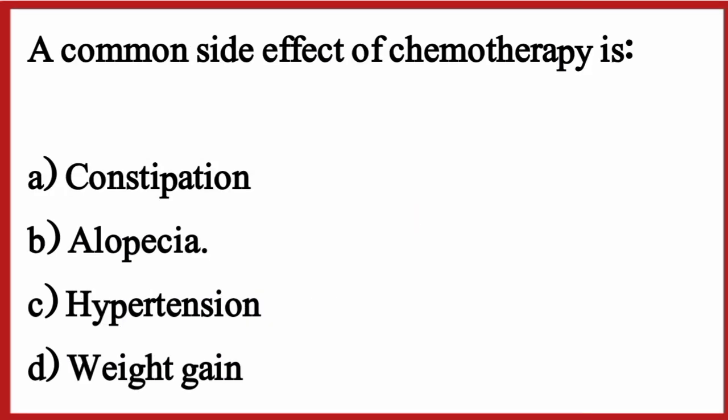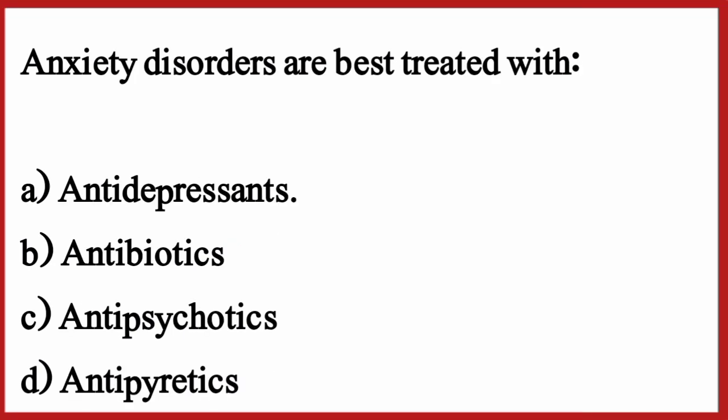A common side effect of chemotherapy is — the correct option is Option B: Nausea/vomiting (bone marrow suppression).